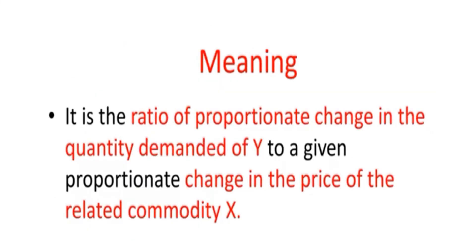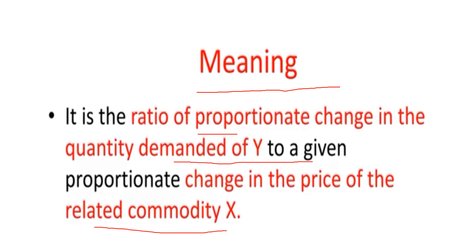The next concept is cross elasticity of demand. It is the ratio of the proportional change in quantity demanded of good Y to a given proportional change in the price of related commodity X. In cross elasticity, we compare two products — the demand for one product changes because the price of the other product changes. For example, substitute goods like tea and coffee.